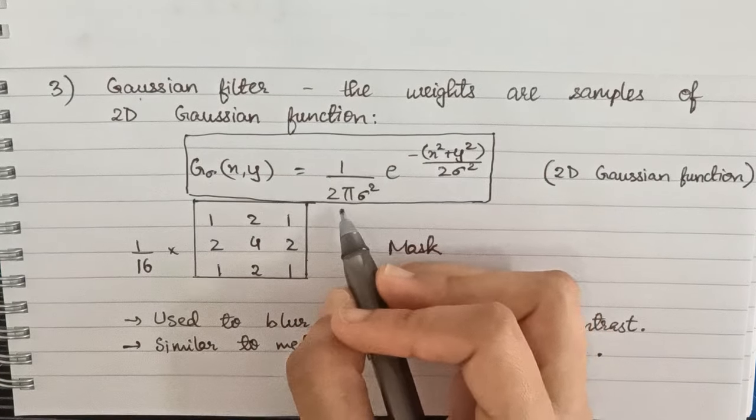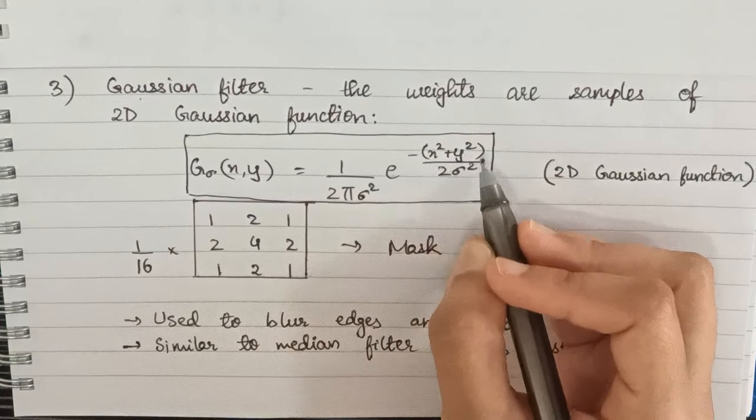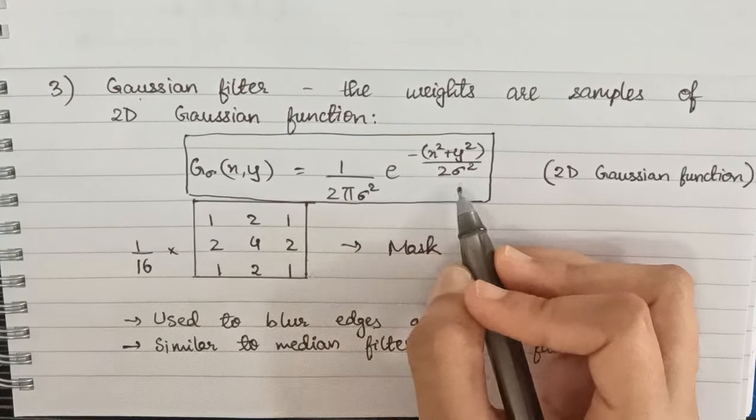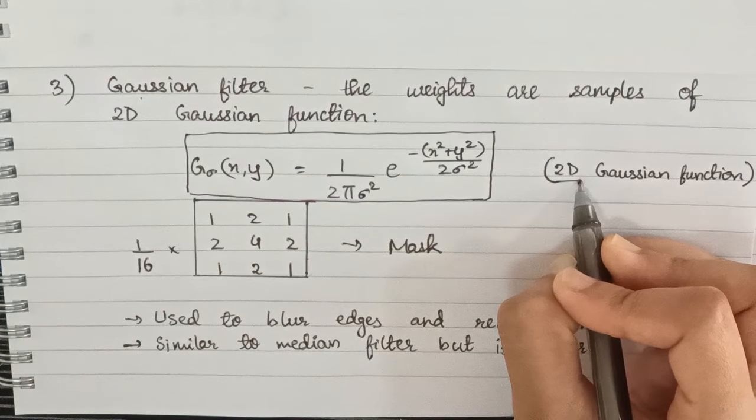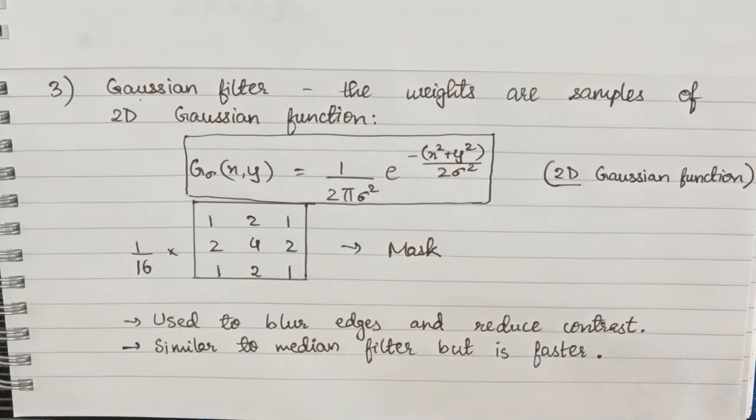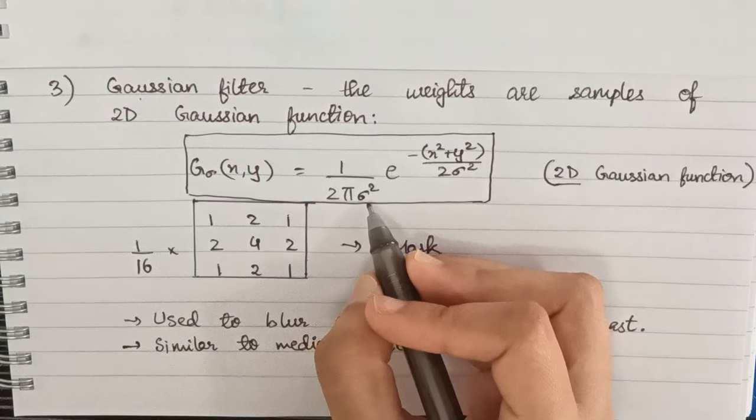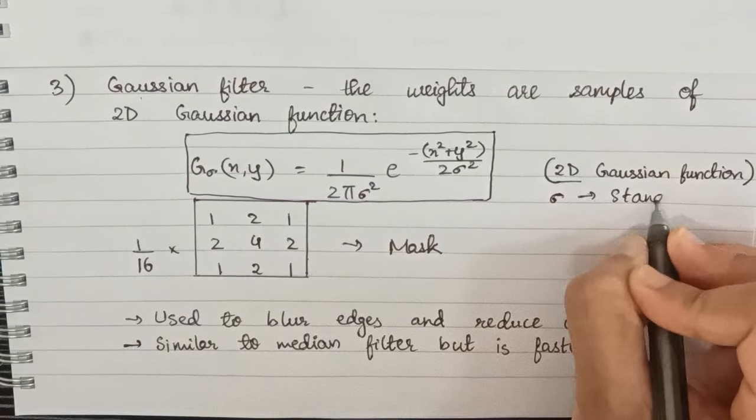If you look here, 1 by 2π sigma squared into e raised to minus (x squared plus y squared) by 2 sigma squared - this is our 2D Gaussian function, which means this is a combination of two 1D Gaussian functions. Here sigma is the standard deviation of the distribution. This function is used for creating the mask which we use on our images.